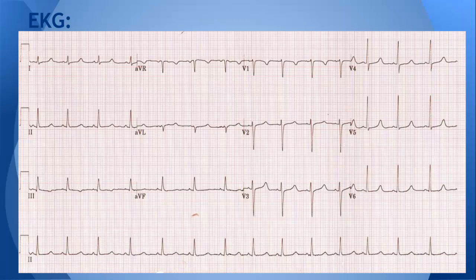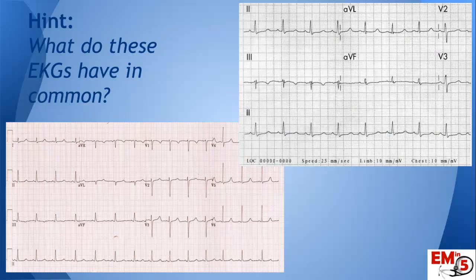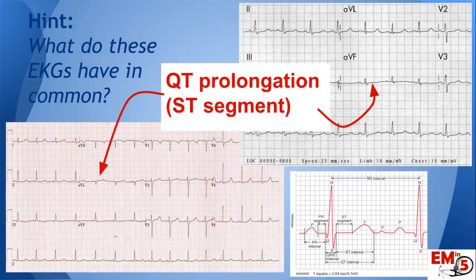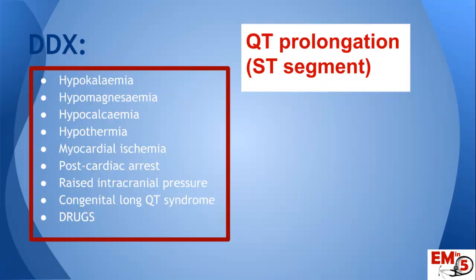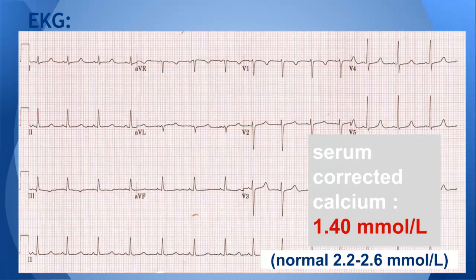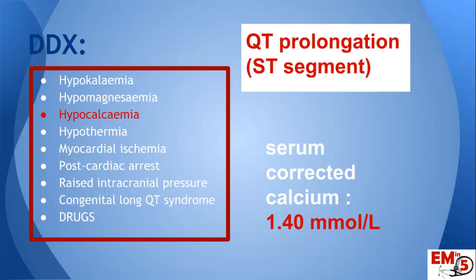So what's abnormal here? Let me give you a little clue — here are two more with the same finding. We have QT prolongation. So now we're starting to think about our differential for QT prolongation, and as we're doing that, our lab values come back. We have a low calcium — the serum-corrected calcium is 1.4, with a normal of 2.2 to 2.6 millimoles per liter. So we have hypocalcemia causing QT prolongation and probably seizures in our patient.